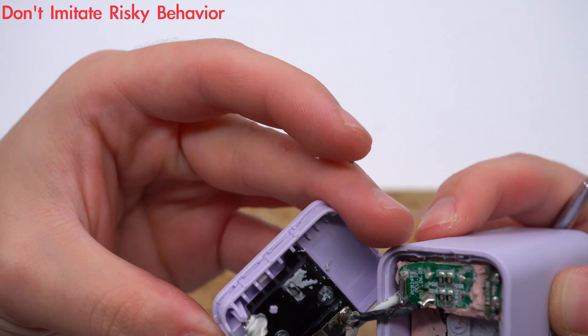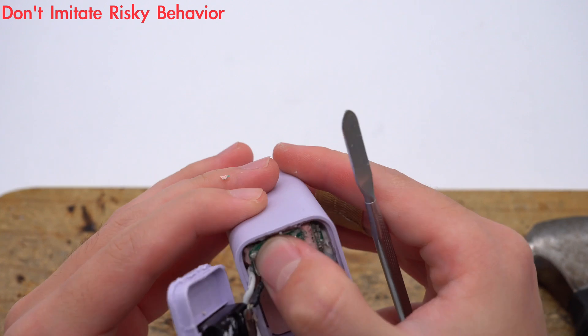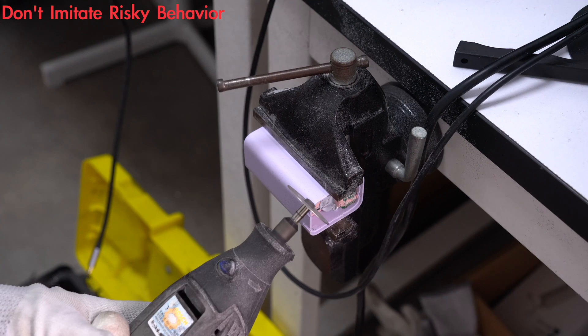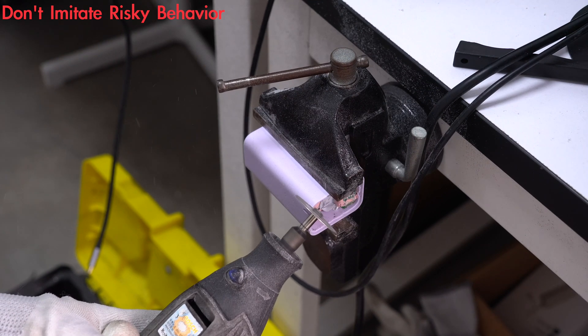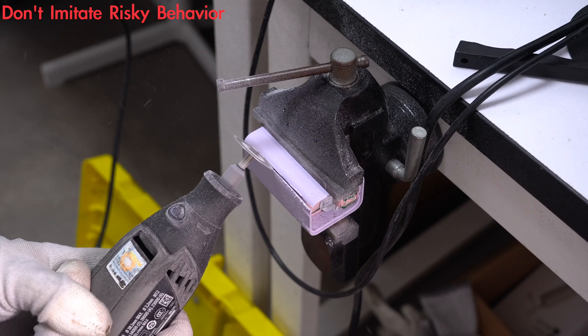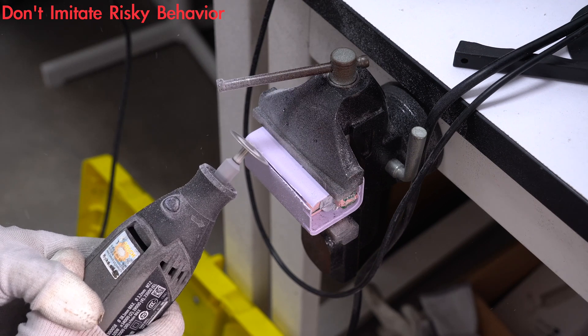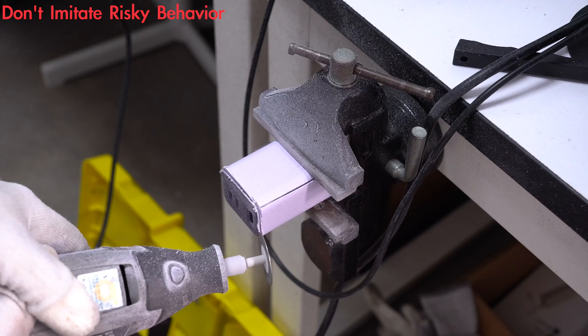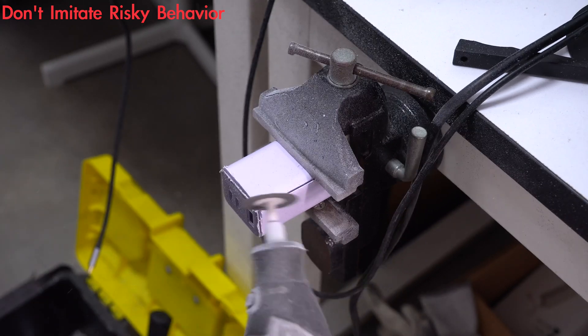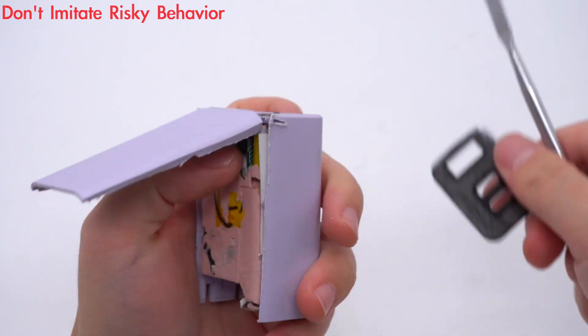The plugs are connected to the PCB module through wires. And the PCB module is filled with potting compound. Next, use a cutting machine to cut the remaining case. Take out the PCB module.